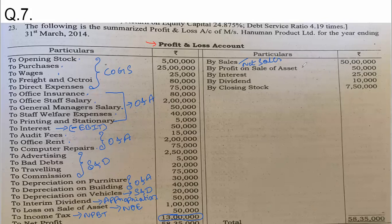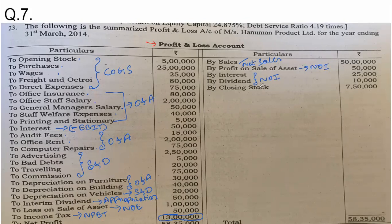Profit on sale of asset — the company sold an asset and earned profit from it. Is this a business profit? No. This is non-operating income. Interest received and dividend received are also non-operating income, because the company earns interest and dividend when it invests outside — and that outside investment is not the core business. Therefore, whatever income is earned from that is non-operating income.